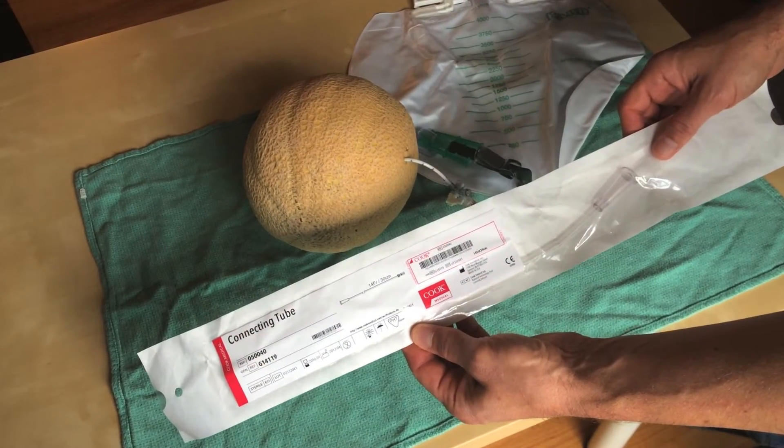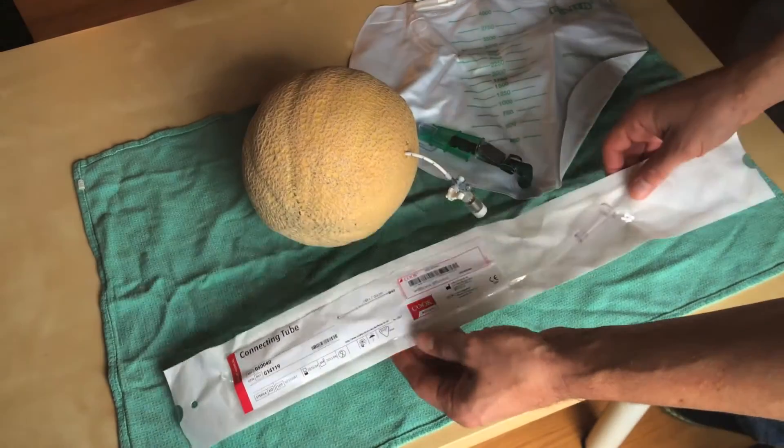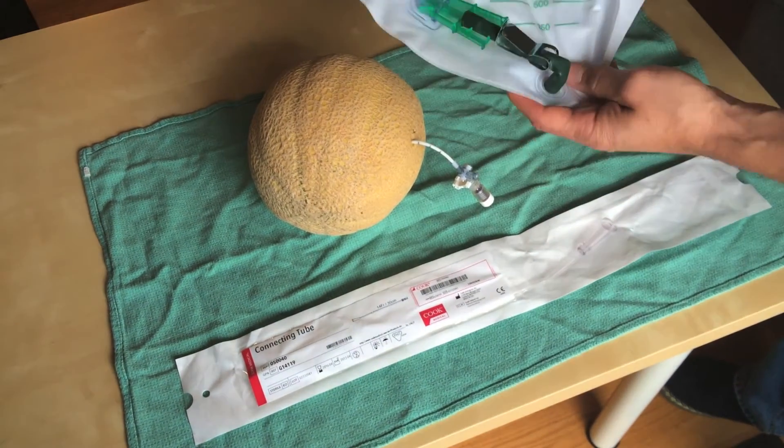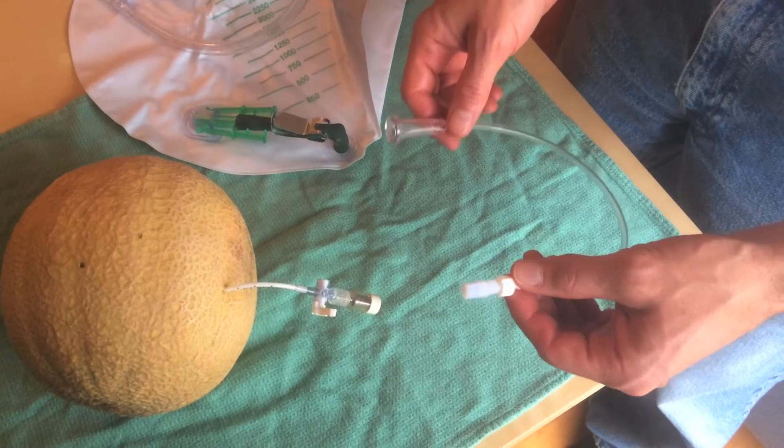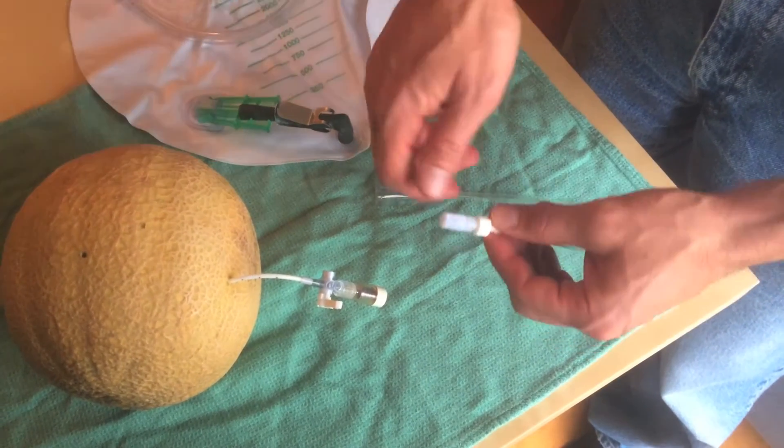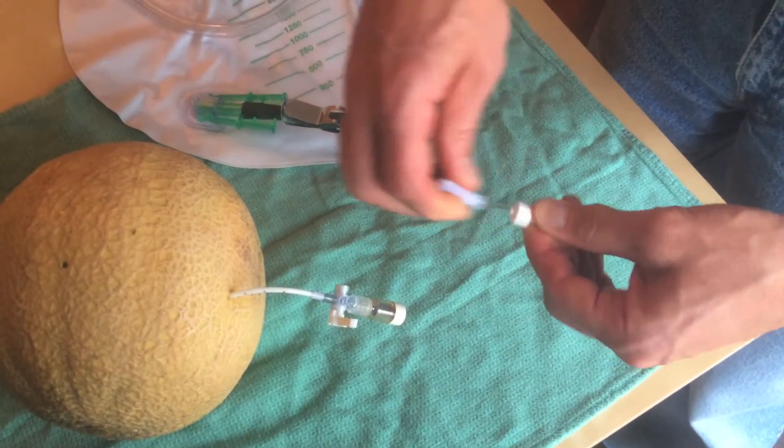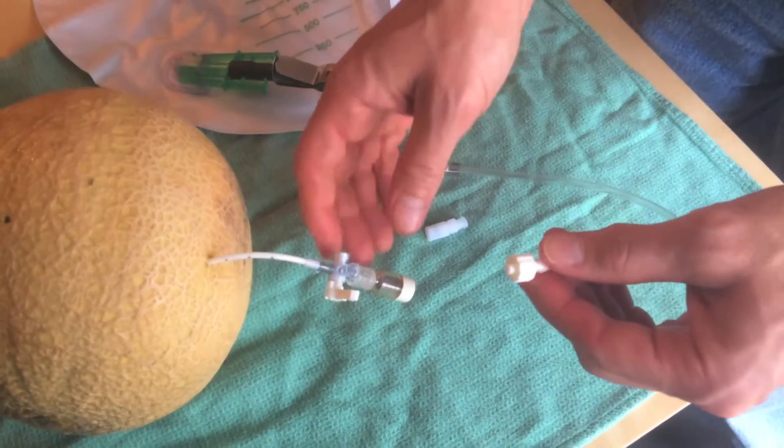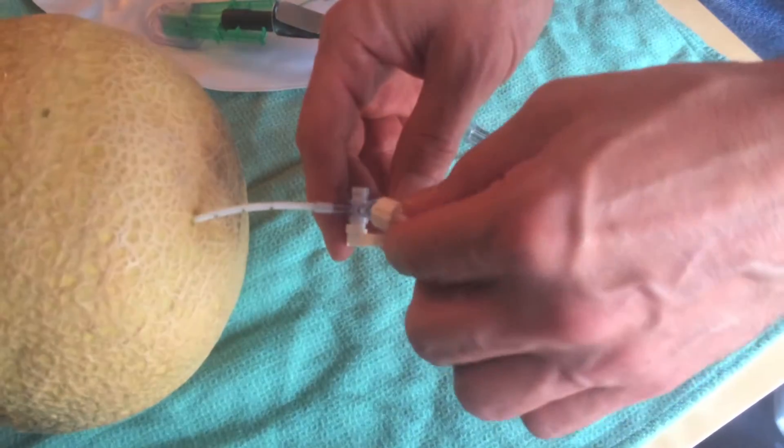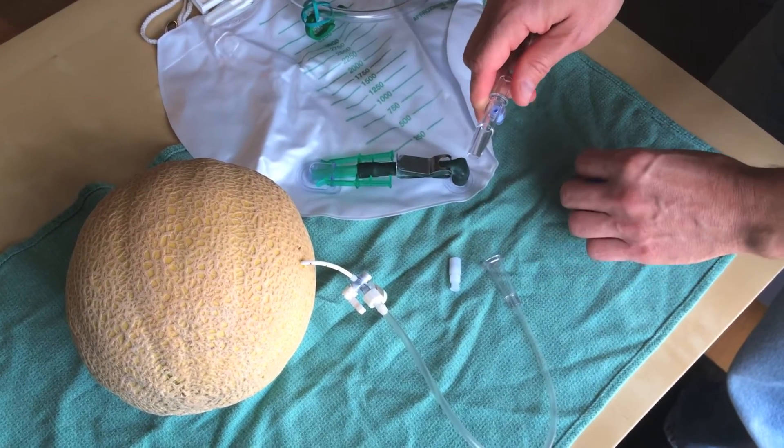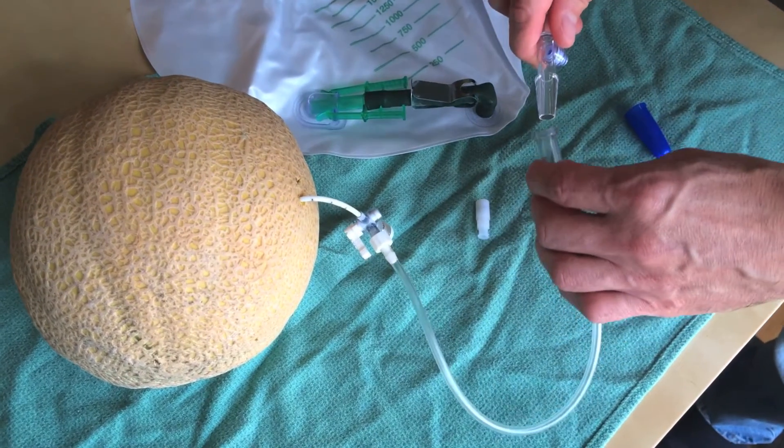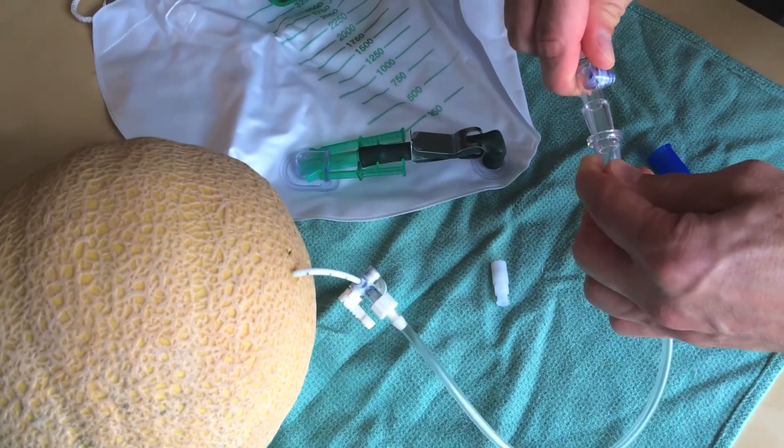The second option for drainage is to use a connecting tube and a Foley drainage bag. Take the connecting tube, remove the cap from the luer lock and attach the connecting tube to the stopcock using the luer lock. Take the tubing from the Foley drainage bag and attach it to the other end of the connecting tube.